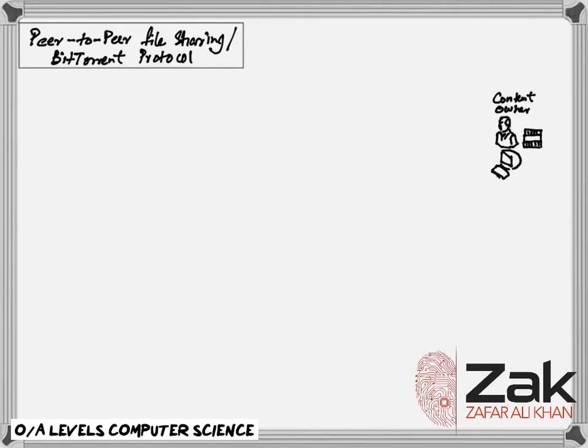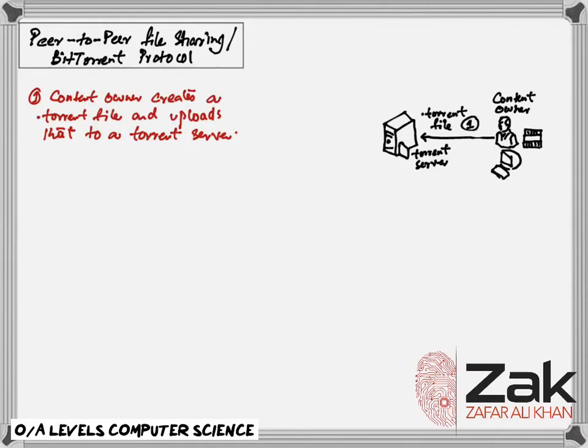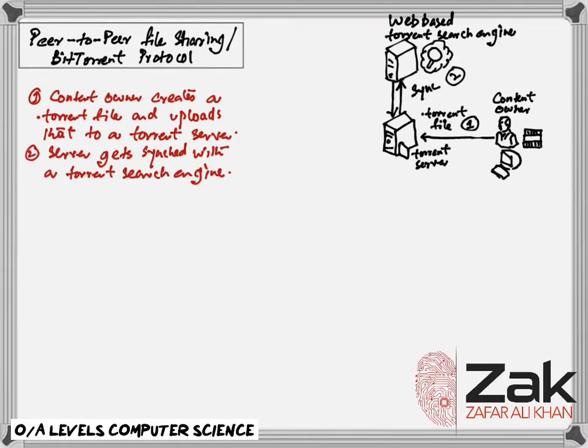At first the content owner creates the content and shares that content in the form of dot torrent file, creates it and uploads that to the torrent server here. Number two, a server gets synced with a torrent search engine so that the torrent that was created by the content owner can be searched for.